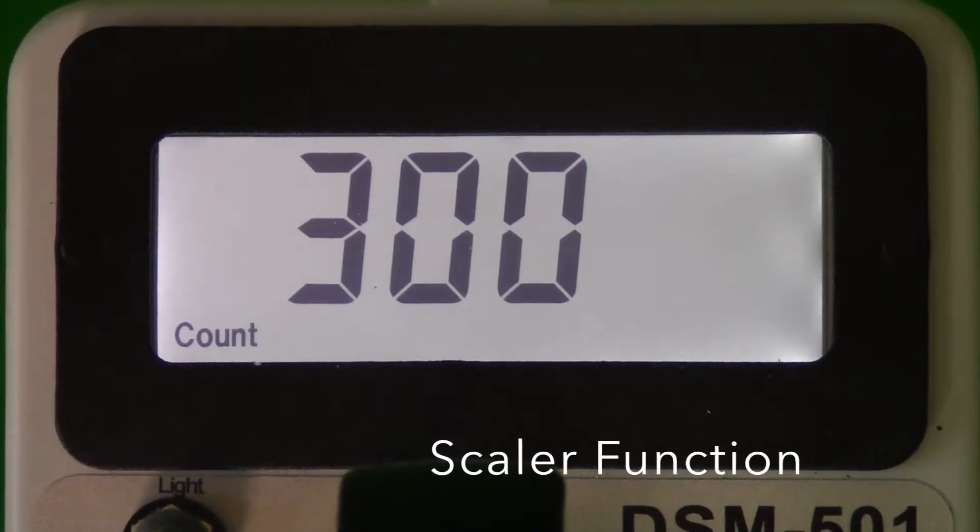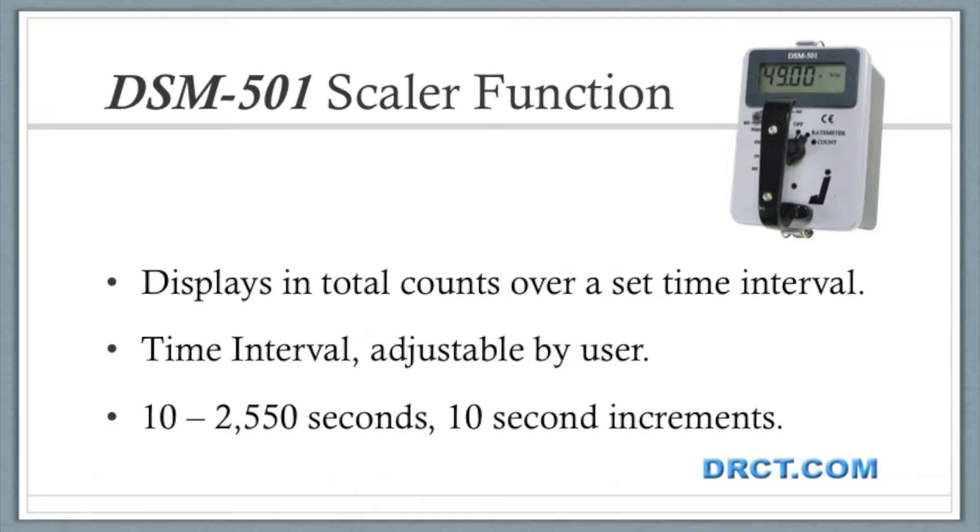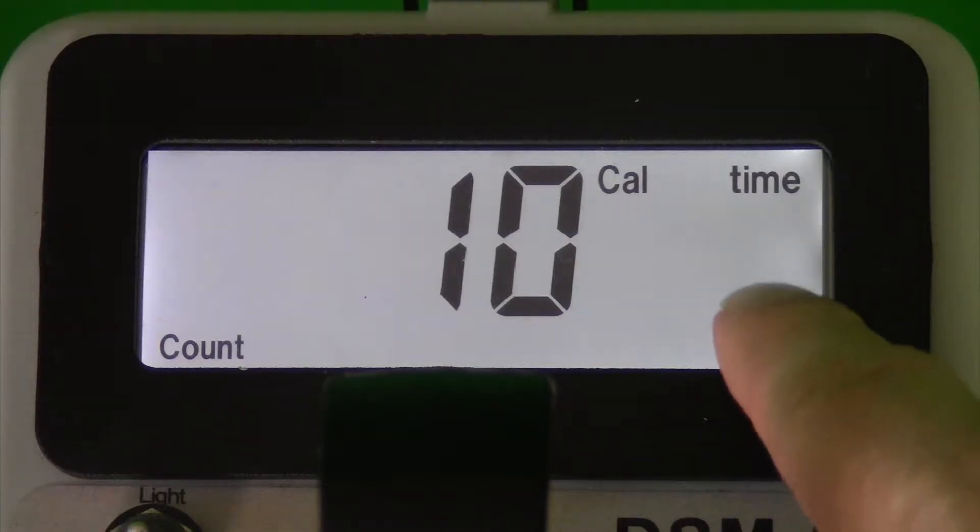The scalar mode displays and counts total counts over a set time interval. The interval is adjustable by the user, with counting times from 10 to 2,550 seconds in 10-second increments. The scalar is now set at a 10-second count interval for demonstration purposes.